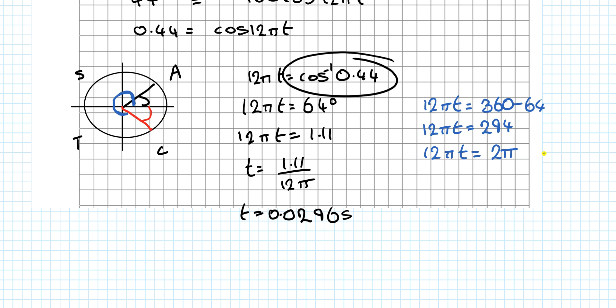So again, this is the minus 1.11. So in the calculator it's 2π minus 1.11. And the blue angle is 1.11. The blue angle is going to be 12πt equals 5.1731. t equals divided by 12π, 0.1372 seconds. There are your two answers.